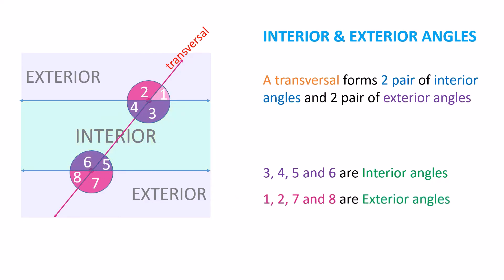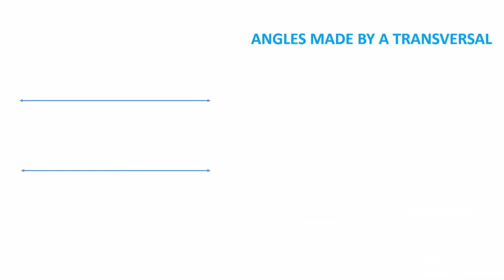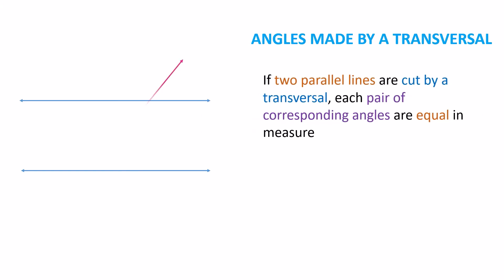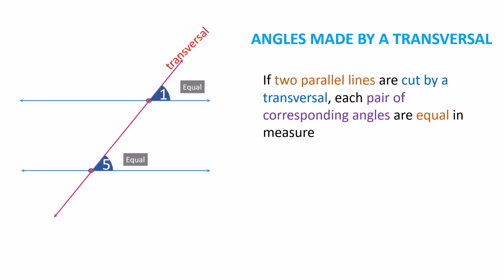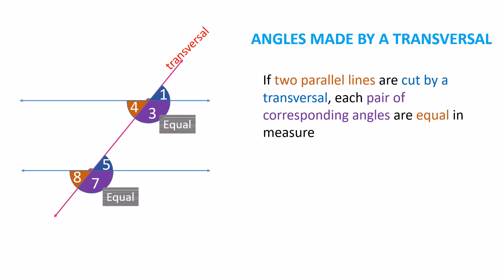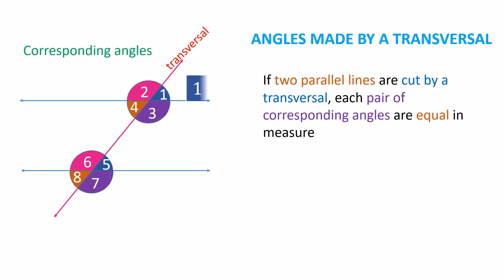Angles 1, 2, 7, and 8 are exterior angles. If two parallel lines are cut by a transversal, each pair of corresponding angles are equal in measure. Here, corresponding angles are 1 and 5.